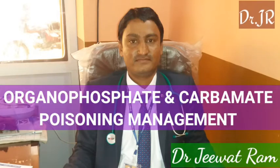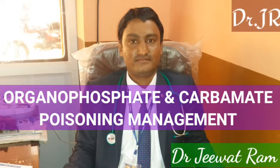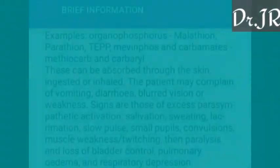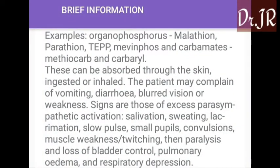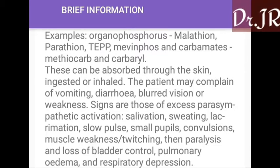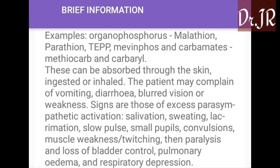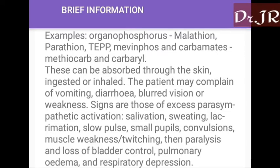Hello friends, I'm Dr. Jeev. Today I will discuss the management of organophosphate and carbamate poisoning. Brief information: examples of organophosphorus compounds include malathion, parathion, TEPP, and marine force; carbamates include methiocarb and carbaryl. These can be absorbed through the skin.